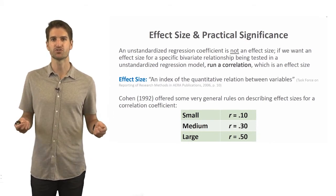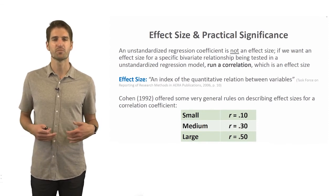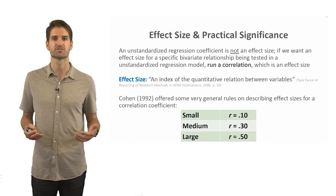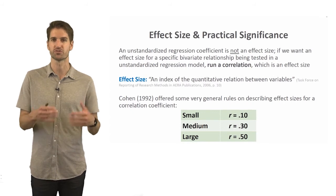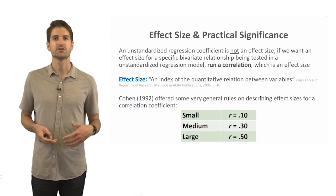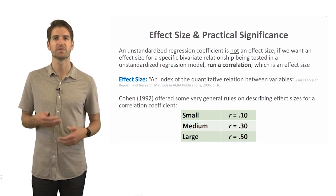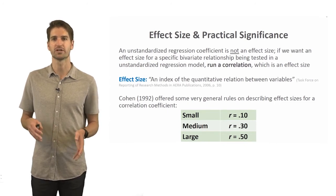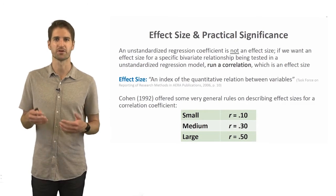Cohen offered general rules for describing effect sizes for correlation coefficients — note these are for correlation coefficients, not regression coefficients. A small correlation coefficient is approximately plus or minus 0.10, a medium is plus or minus 0.30, and a large correlation coefficient is r equal to plus or minus 0.50, around thereabouts.